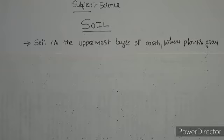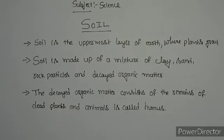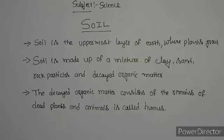Now let us learn more about soil. What is soil made up of? Soil is made up of a mixture of clay, sand, rock particles, and decayed organic matter. The decayed organic matter consists of the remains of dead plants and animals, and it is called humus. Soil is not hard like rock — there are spaces between the particles of soil.